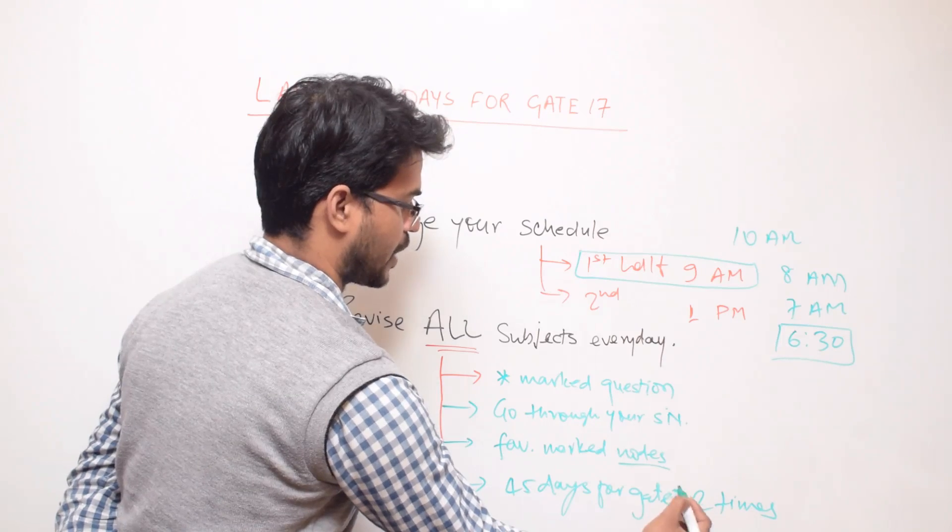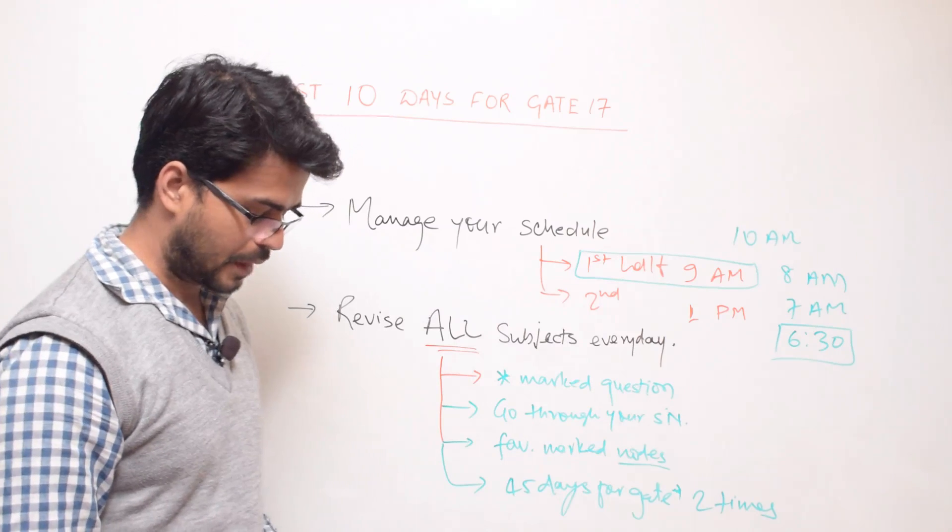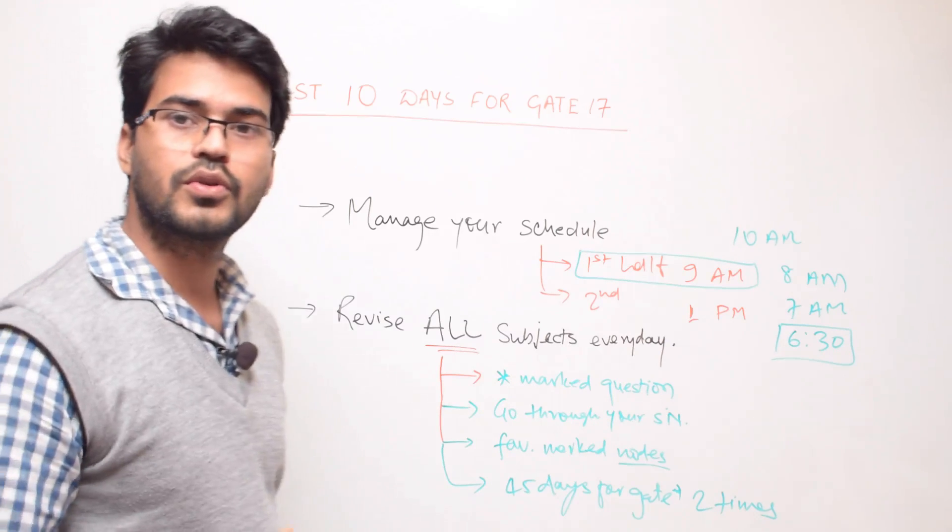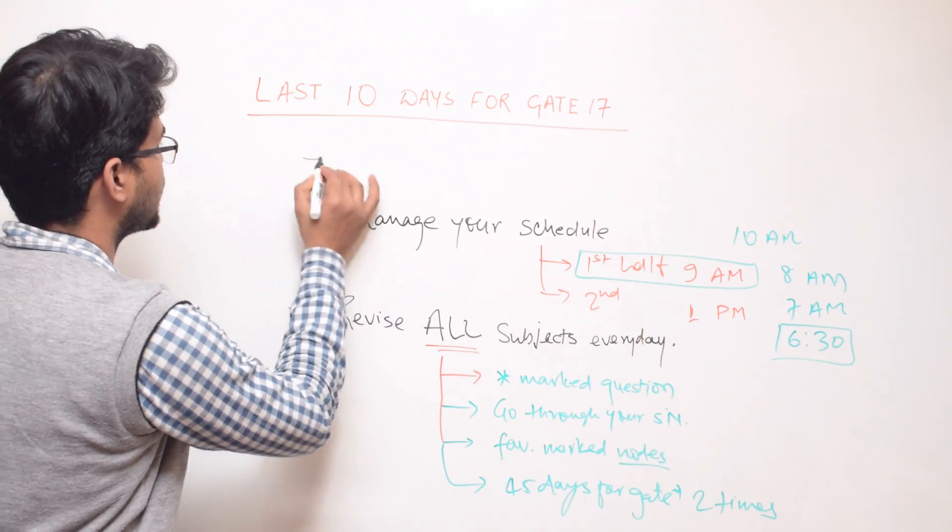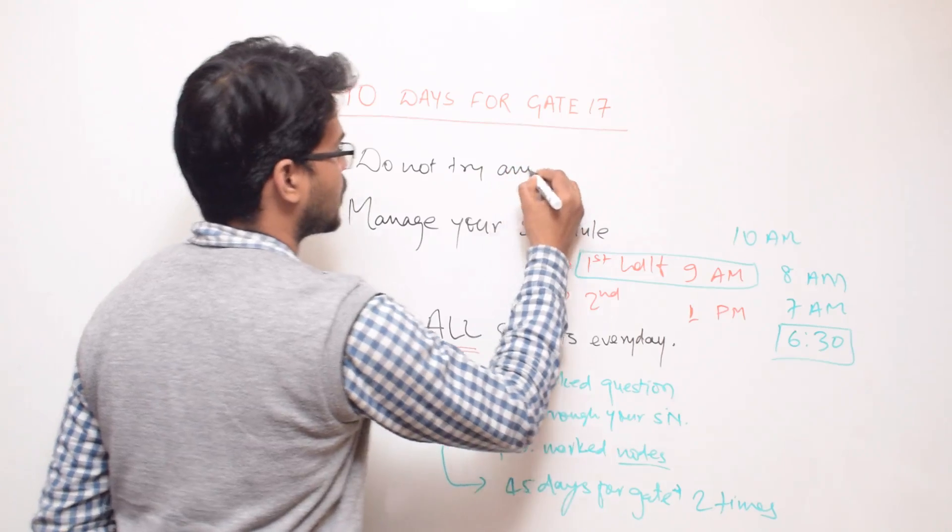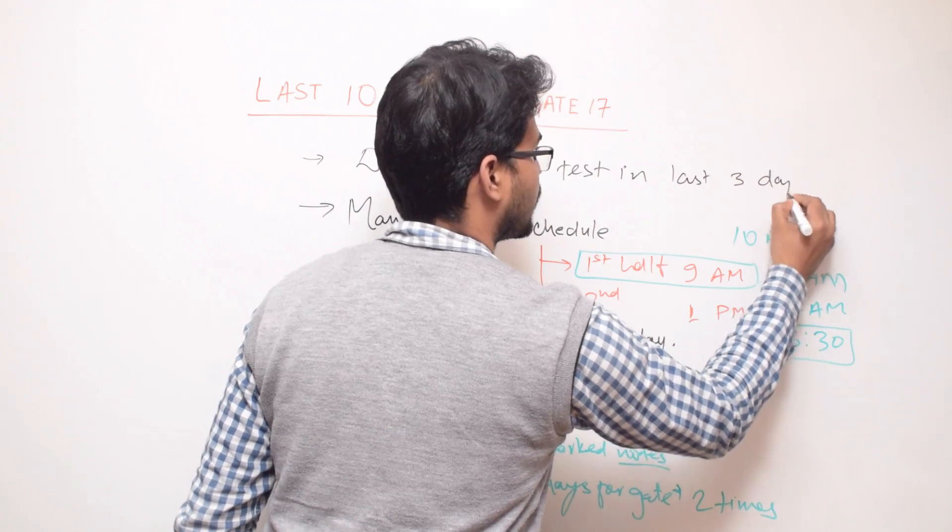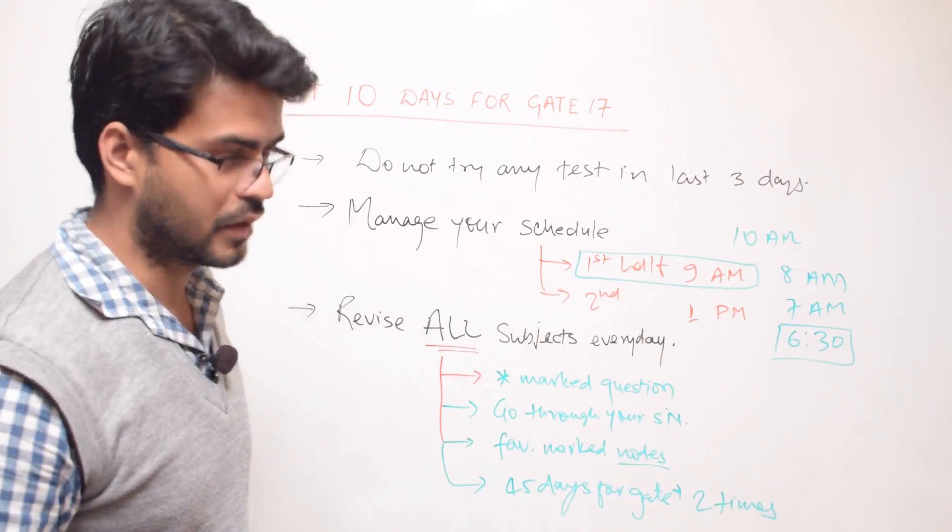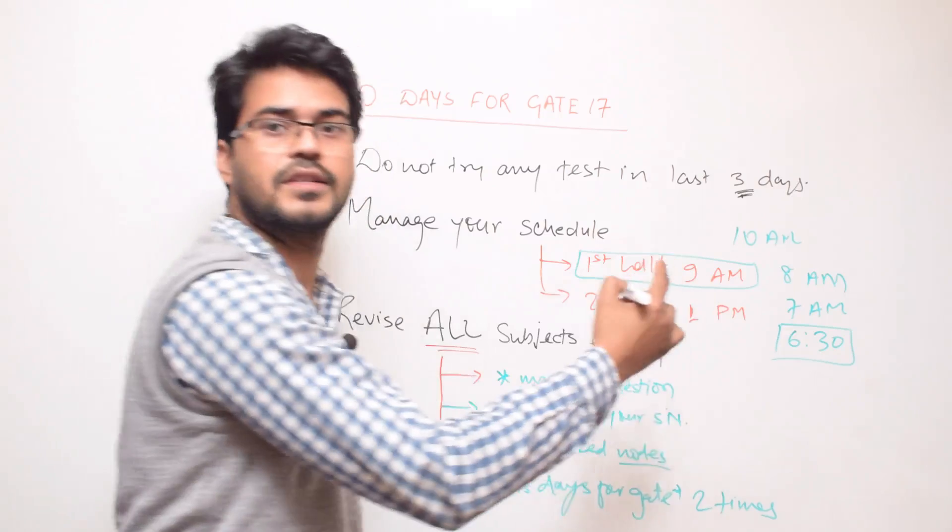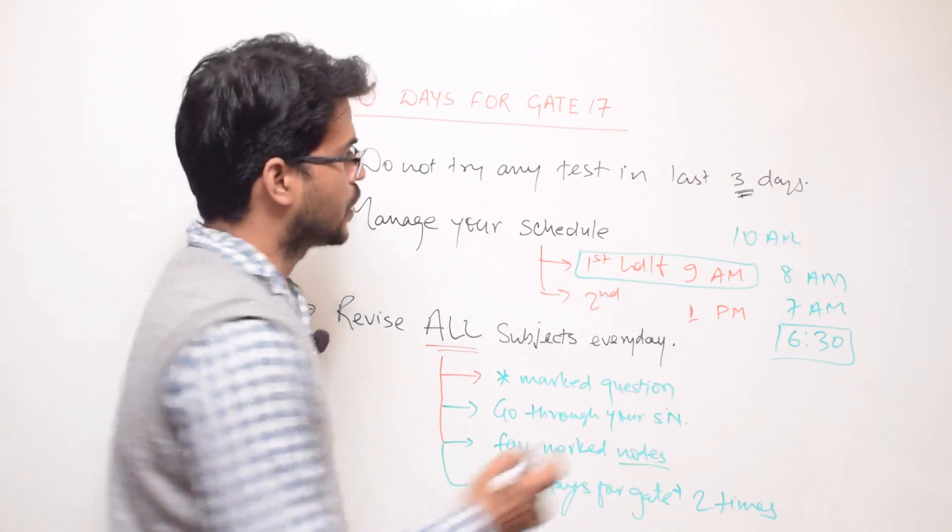Because many important and very important topics have been covered in this section on Tector which will be very helpful for you. Now two other things are also very important I would like to mention. One is do not try any test in last three days. Right now you have around 9 days left, so right now you can try, but if it is last three days, during these last three days I strongly recommend don't try any test.